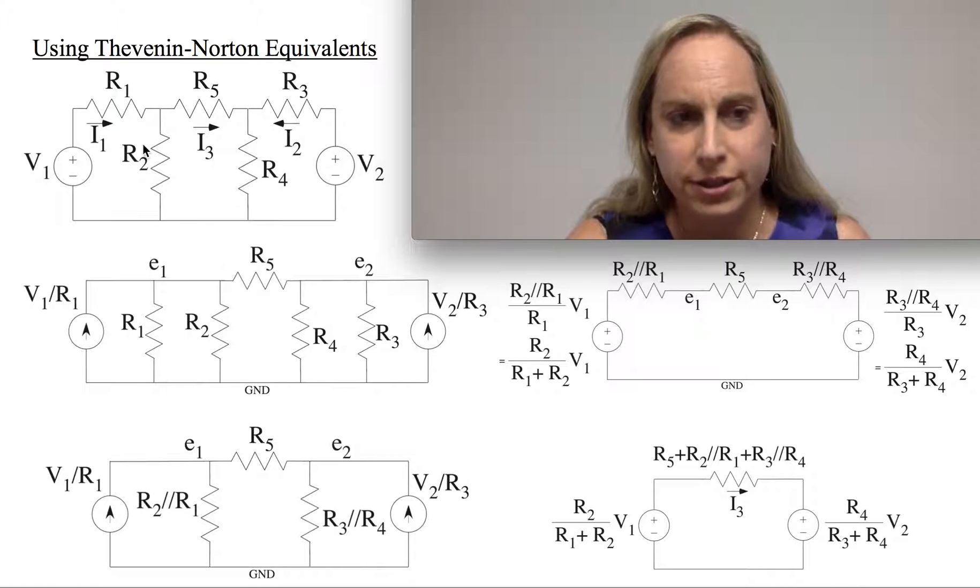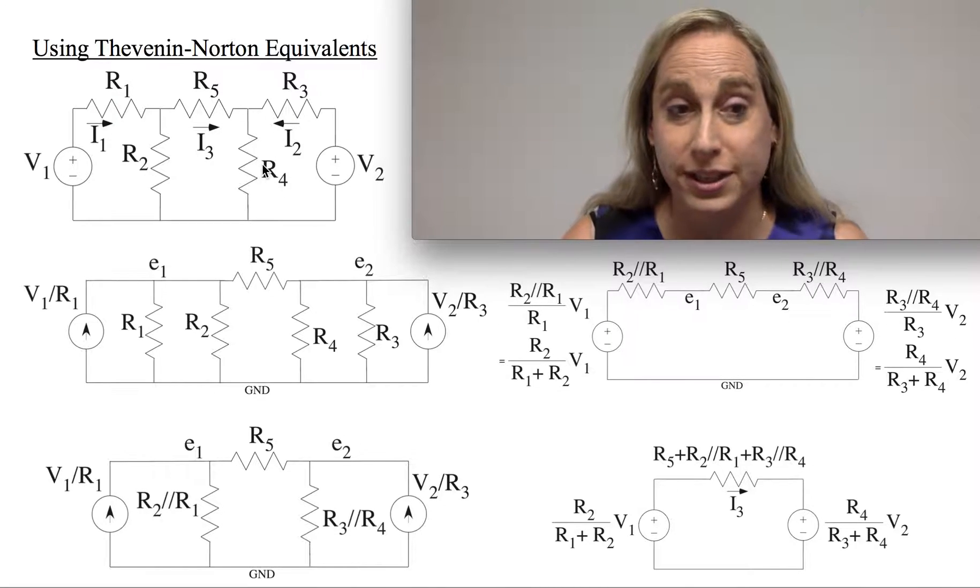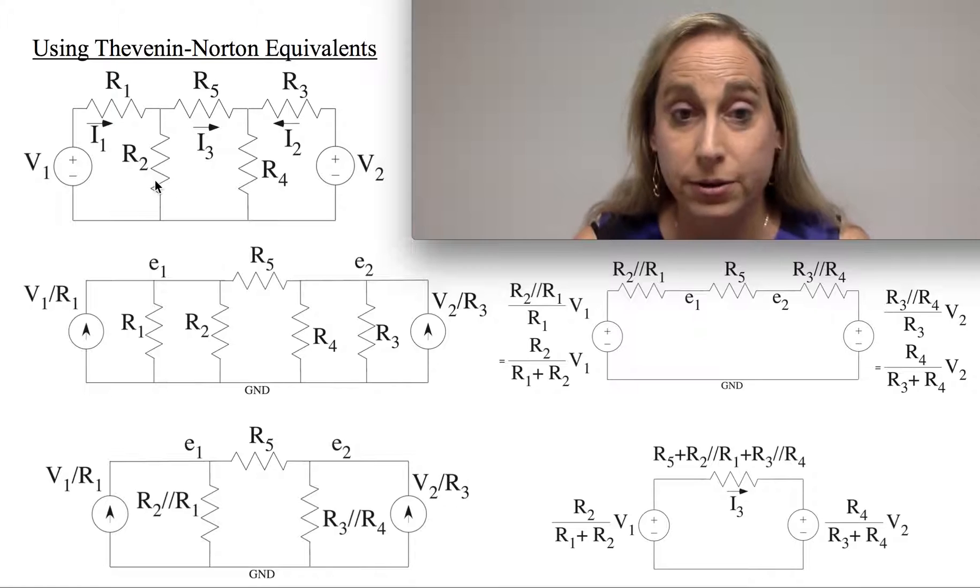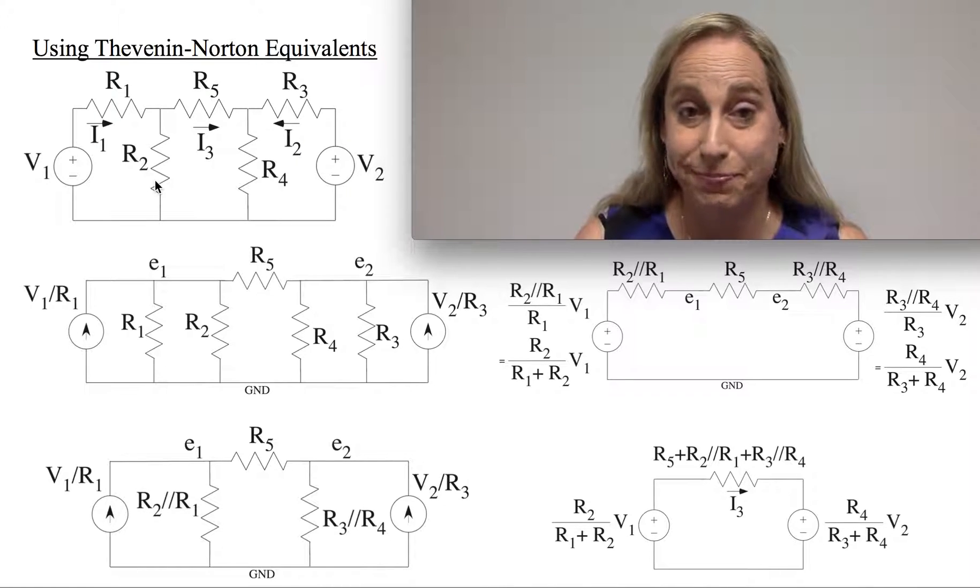And when you look at the circuit you go, well, I have a voltage source and a current source, or voltage source and a resistor, voltage source and a resistor. If I only could have this resistor be in parallel with R4, R3 and R4 in parallel, I could reduce things. If I'd only have R1 in parallel with R2, I could reduce things.